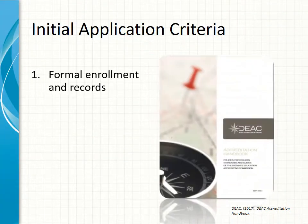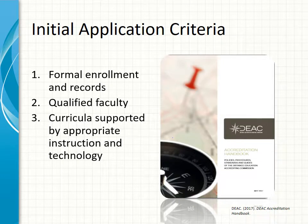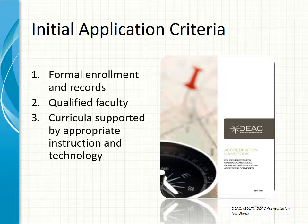Before DEAC officially accepts an institution's initial application for accreditation, the institution must demonstrate that it meets several eligibility criteria. The first three are that they must show a formal enrollment of students and a way to keep records, they must hire qualified faculty, and they must show that their curricula is supported by appropriate instruction and technology. This information is found in the DEAC accreditation handbook.